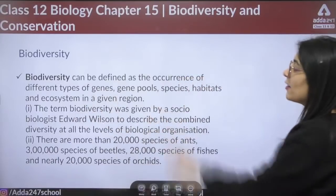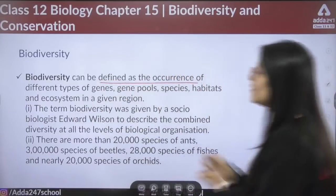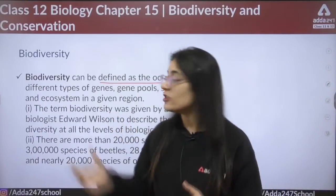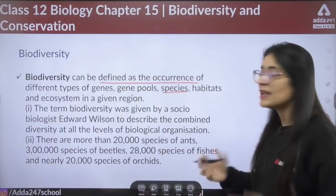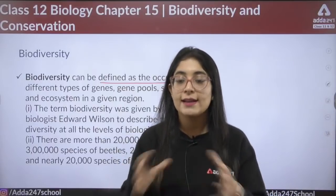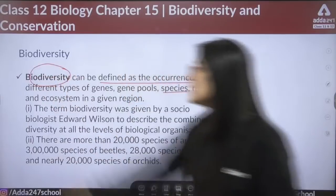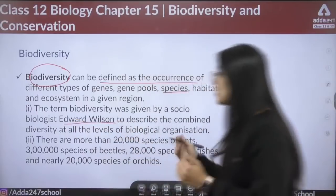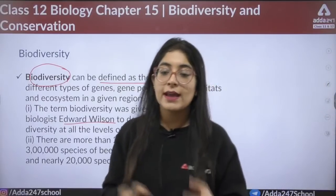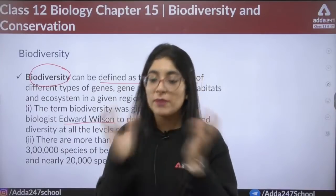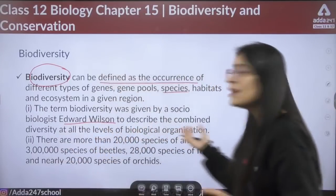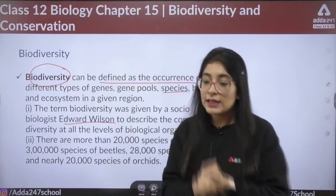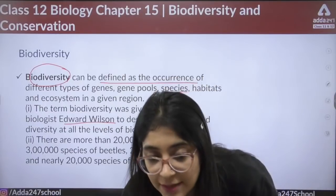Starting off with biodiversity — what is biodiversity? It can be defined as the occurrence of different types of genes, gene pools, species, habitats and ecosystems in a given region. The term biodiversity was given by sociobiologist Edward Wilson to describe the combined diversity at all levels of biological organization.